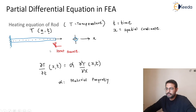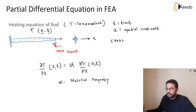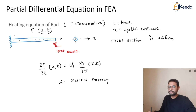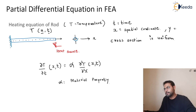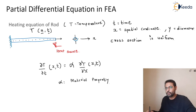Here we are assuming that the cross-section area of the rod is uniform. If the rod had a varying cross-section area, we would have to consider one more spatial coordinate y, which is related to the diameter. But for the sake of simplicity, we are only considering one heat source and a regular cross-section area.